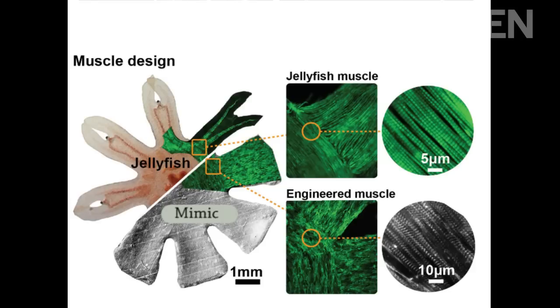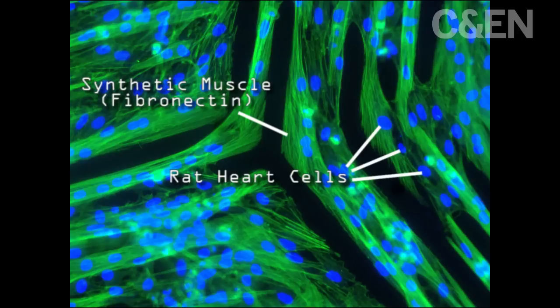To make the fake jellyfish, the researchers fabricated a thin silicone polymer sheet with eight arms. Then they printed a lined pattern of the protein fibronectin onto the sheet to mimic the muscle fiber architecture of the jellyfish.